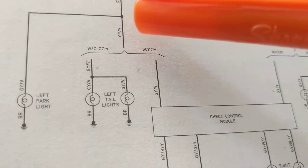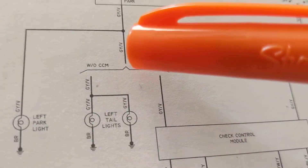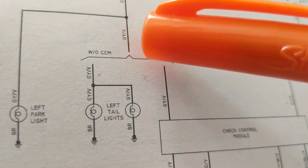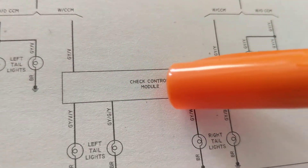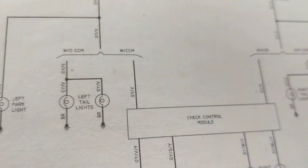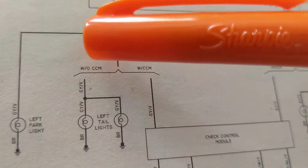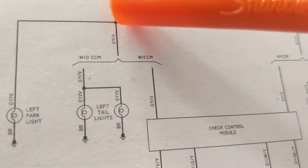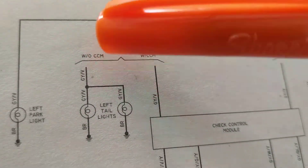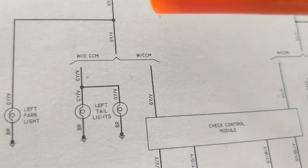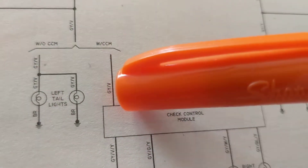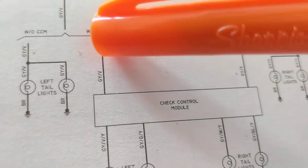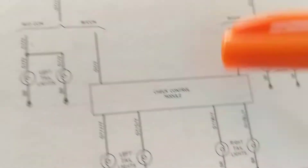Current flows to the left park light. At this node the current splits — anytime you see a dotted node with branches, that means there's a connection. Now where does the current flow? This is the tricky part. When you see 'W' and 'W/O' — with and without — if I'm following the path marked 'without CCM,' I don't expect to see any module. I follow that path and just two lights are lit — that makes sense. If I follow the 'with Check Control Module' path, sure enough, there it is.